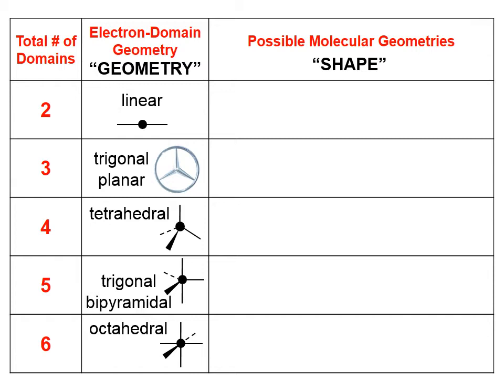If there is an atom hanging off of each domain, then the molecular shape has the same name as the geometry. For the linear electron domain geometry — as in CO2, with a carbon in the middle and oxygen on each end — the only possible shape is also a linear molecular geometry. That's the simplest case.